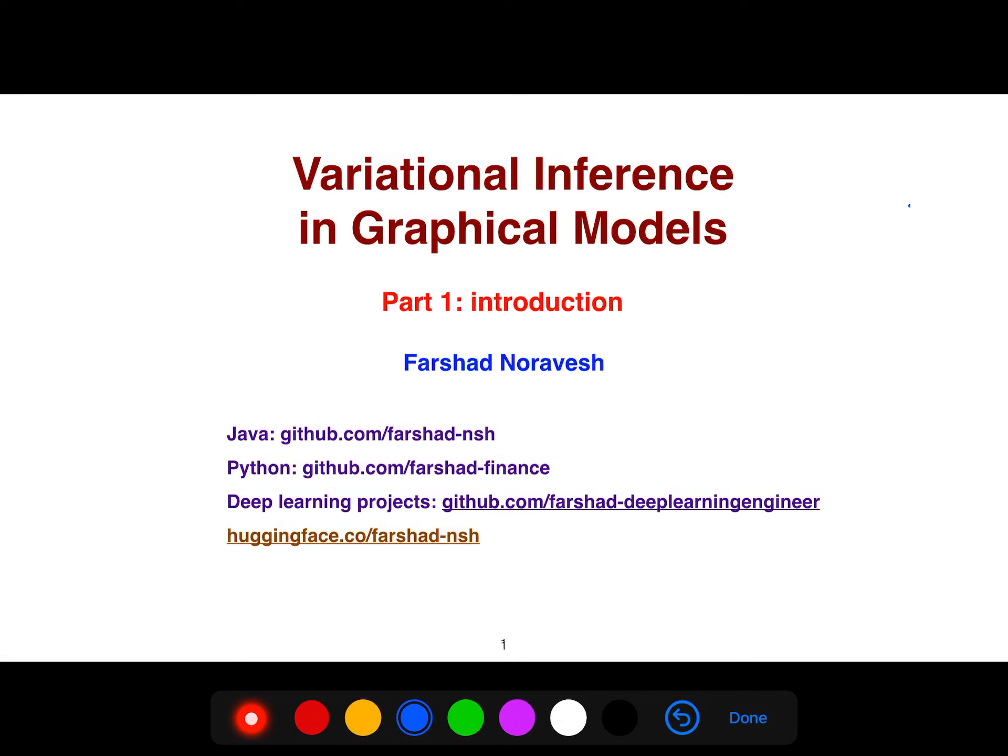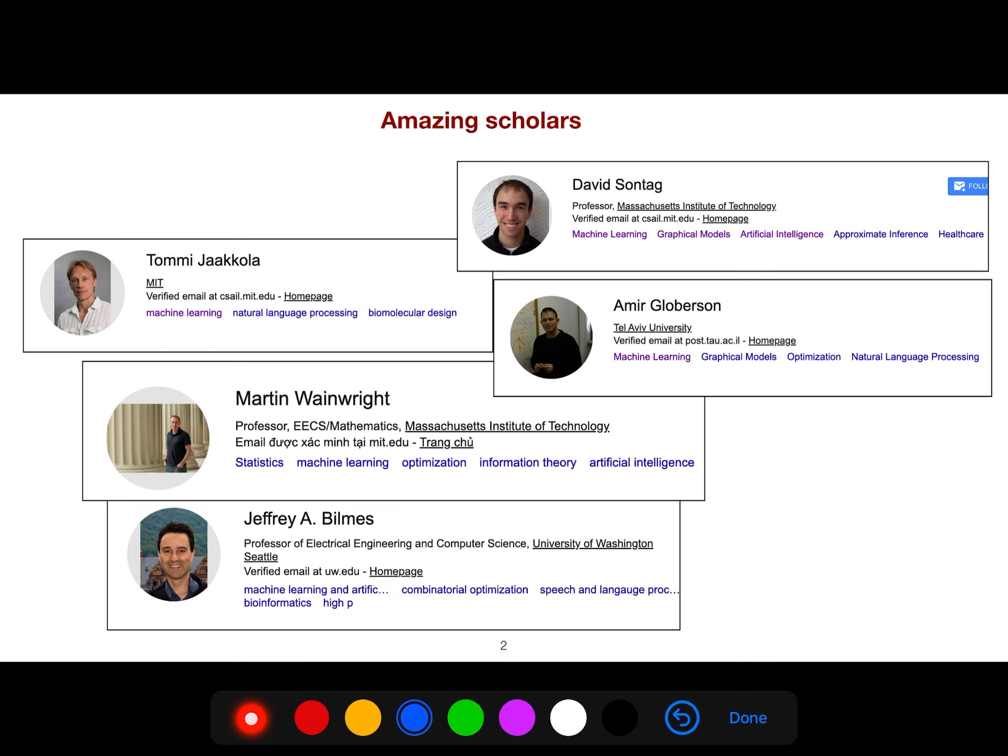Now I'm going to be talking about approximate inference and one of the ways that we can do approximate inference is variational inference in graphical models.